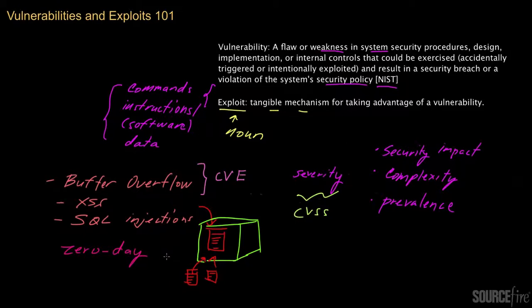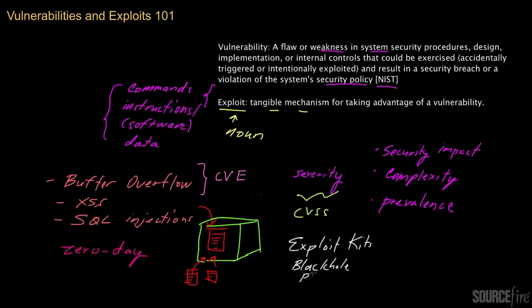One way we're seeing this happen nowadays is via what we call exploit kits. I did a whole series of videos on exploit kits, so I won't go into too much detail, but I do want to raise a few relevant points. Examples of exploit kits include Black Hole, which is one of the more common ones today, as well as Phoenix, the Cool exploit kit, and so on. Look at those other videos for more insight into what these kits do and how they work.